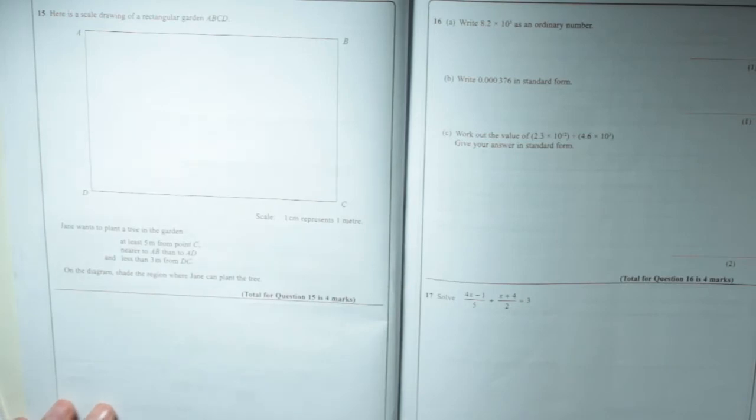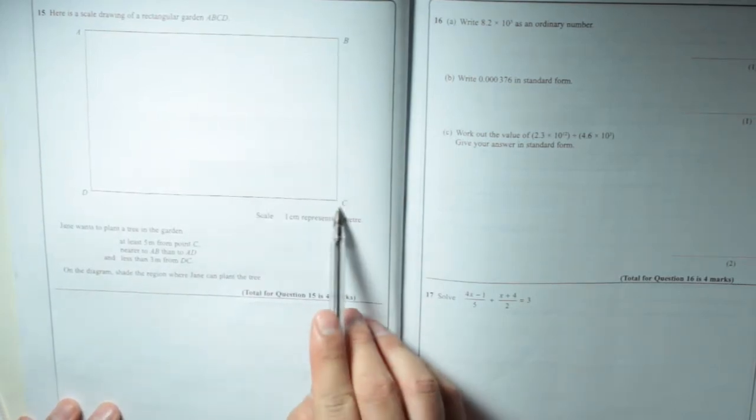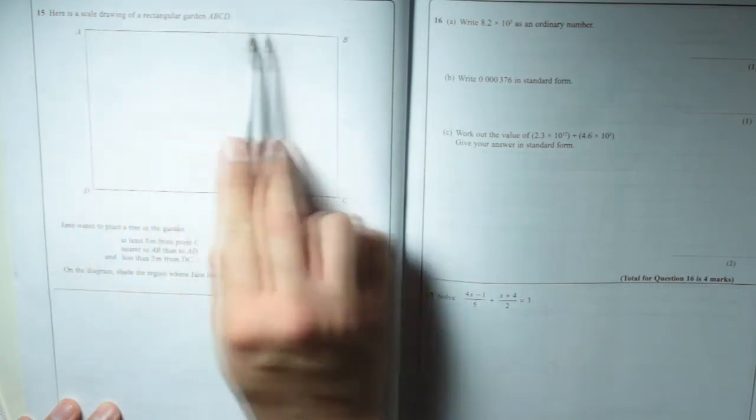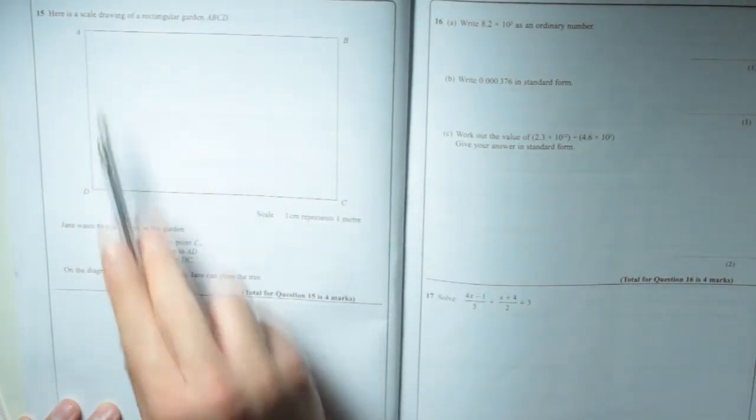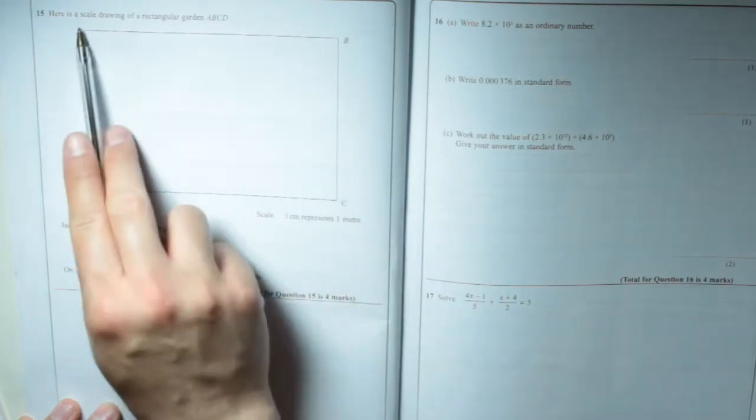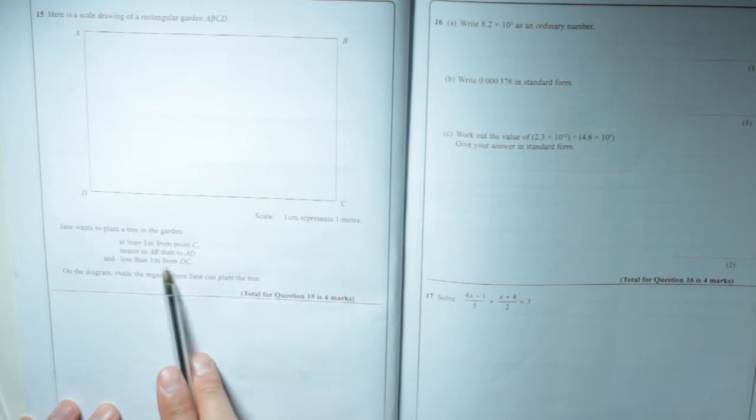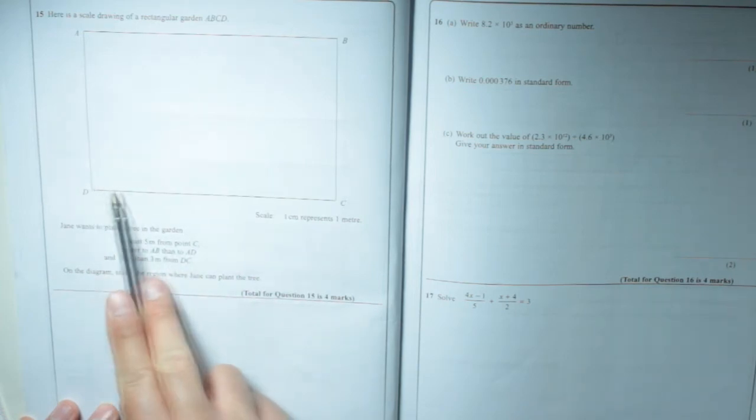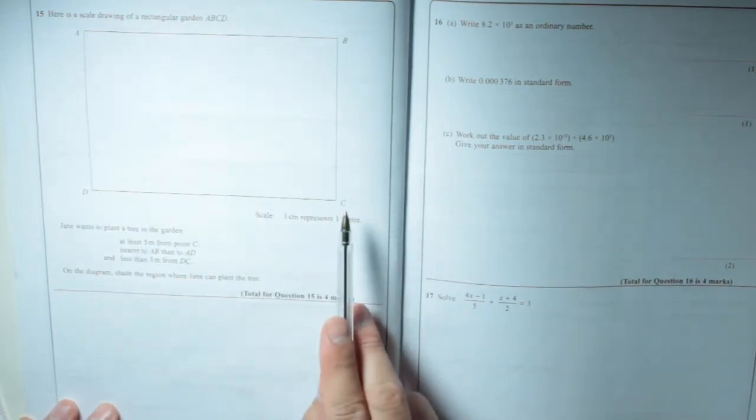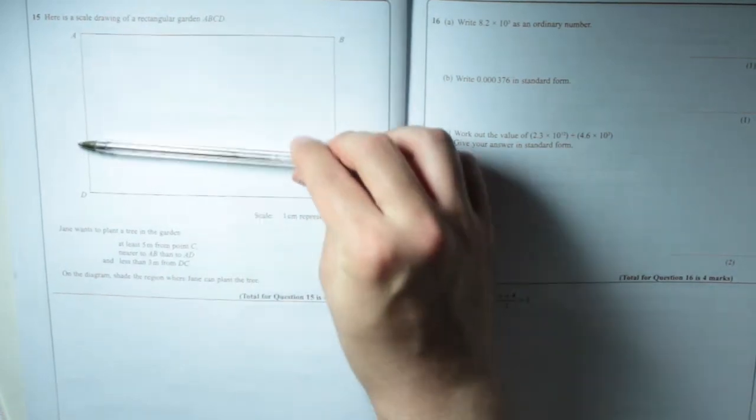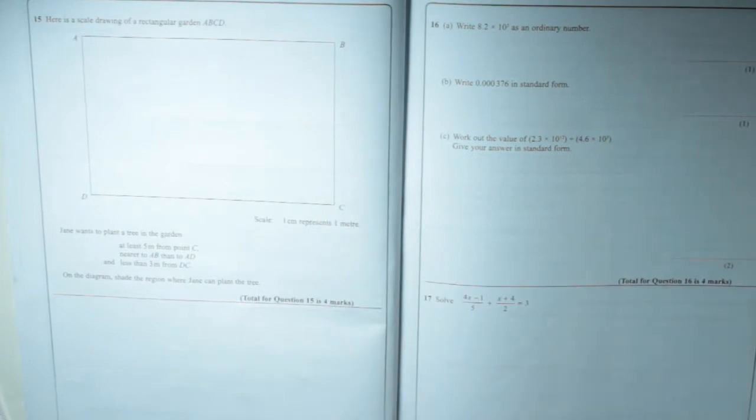Jane wants to plant a tree in the garden at least five metres from point C. So there's point C, at least five metres from point C. Nearer to AB than to AD. So AB is this line here, AD is that line there. And it needs to be closer to AB, this line there. And less than three metres from DC. So here, a line DC, it's got to be less than three metres from it, which means somewhere this side of wherever three metres is.